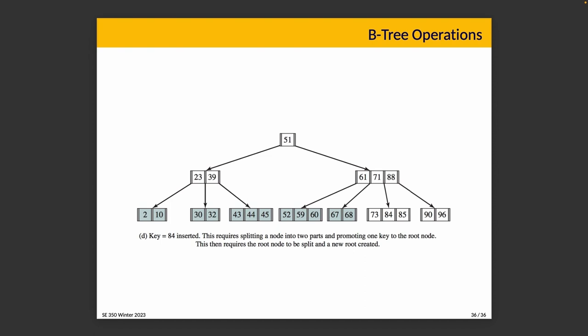With those worked examples of how the B-tree works, the algorithm from the previous slides should now be easier to understand. Given all this, we're now actually ready to look at how files are stored on disk. We took another digression, but we will definitely be talking about how files are stored on disk next, to close out our discussion of file systems.